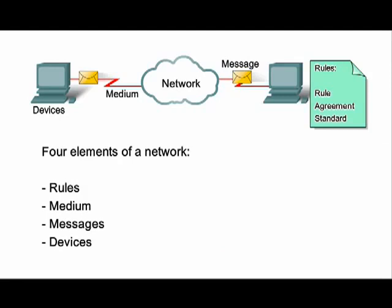This diagram shows the basic elements of a typical network, including devices, mediums tied together by rules, that work together to send messages. We use messages as a term that represents web pages, email, instant messages, telephone calls, and all other forms of communication enabled by the Internet. You will learn about each of these elements individually as you continue your studies, but for now you should understand that every network must have these four common elements to function.